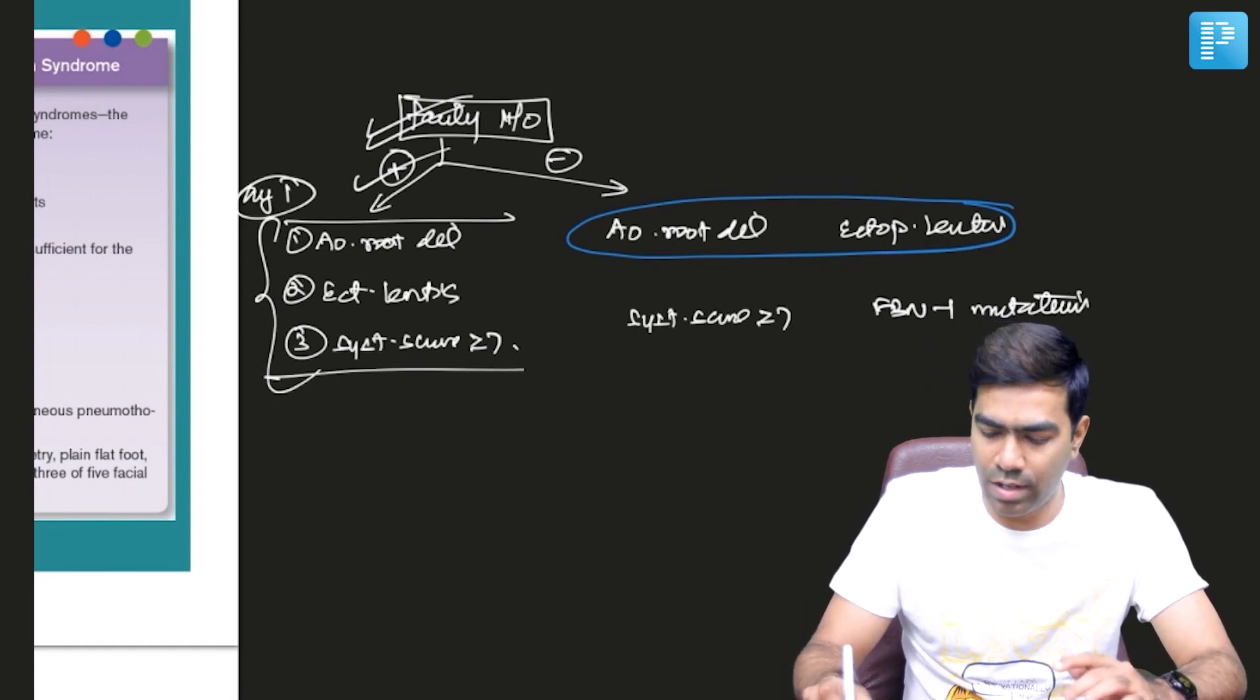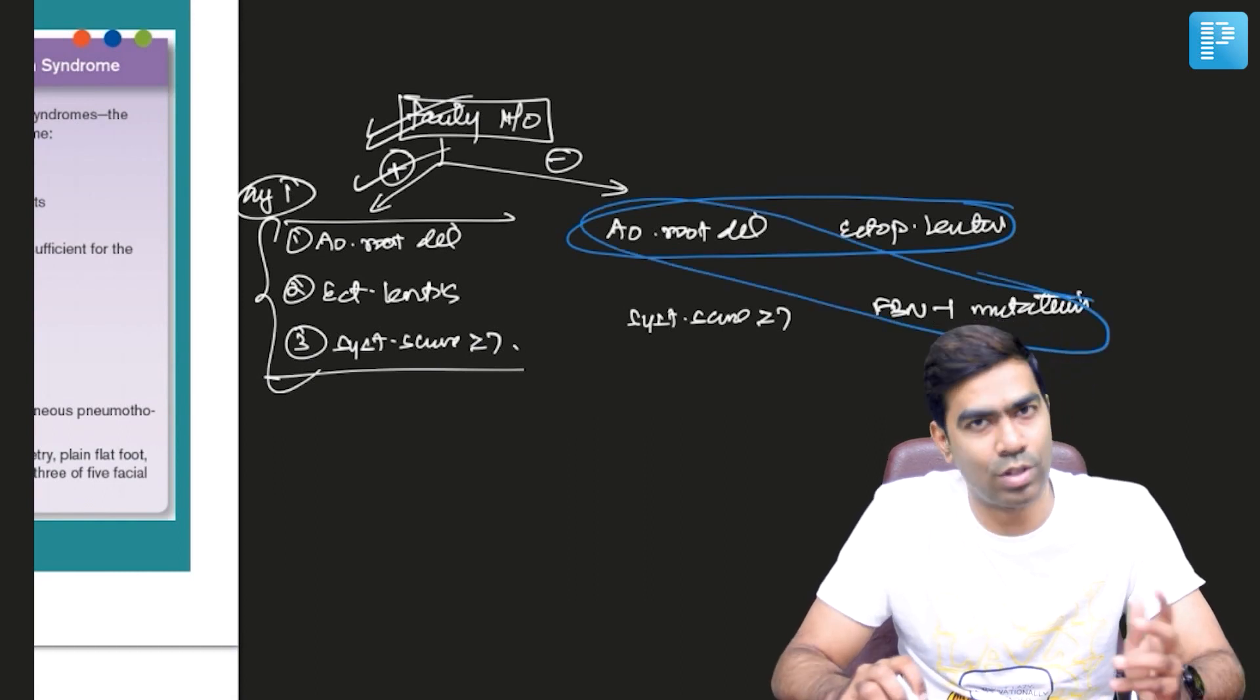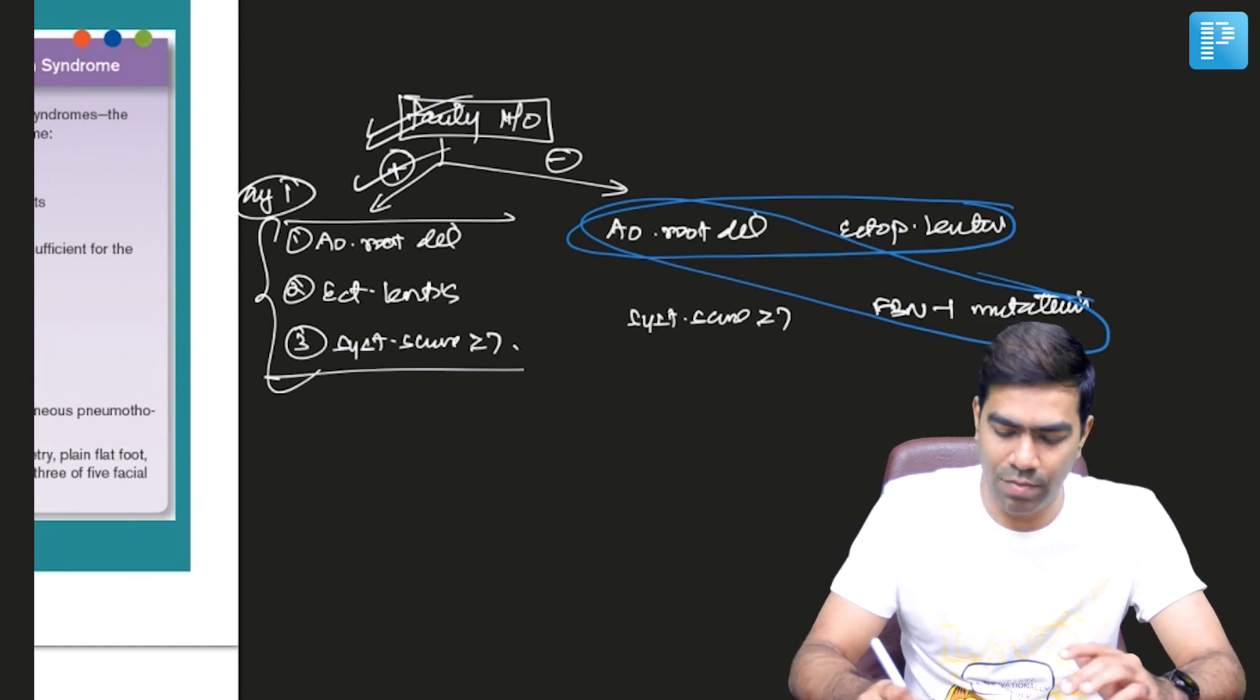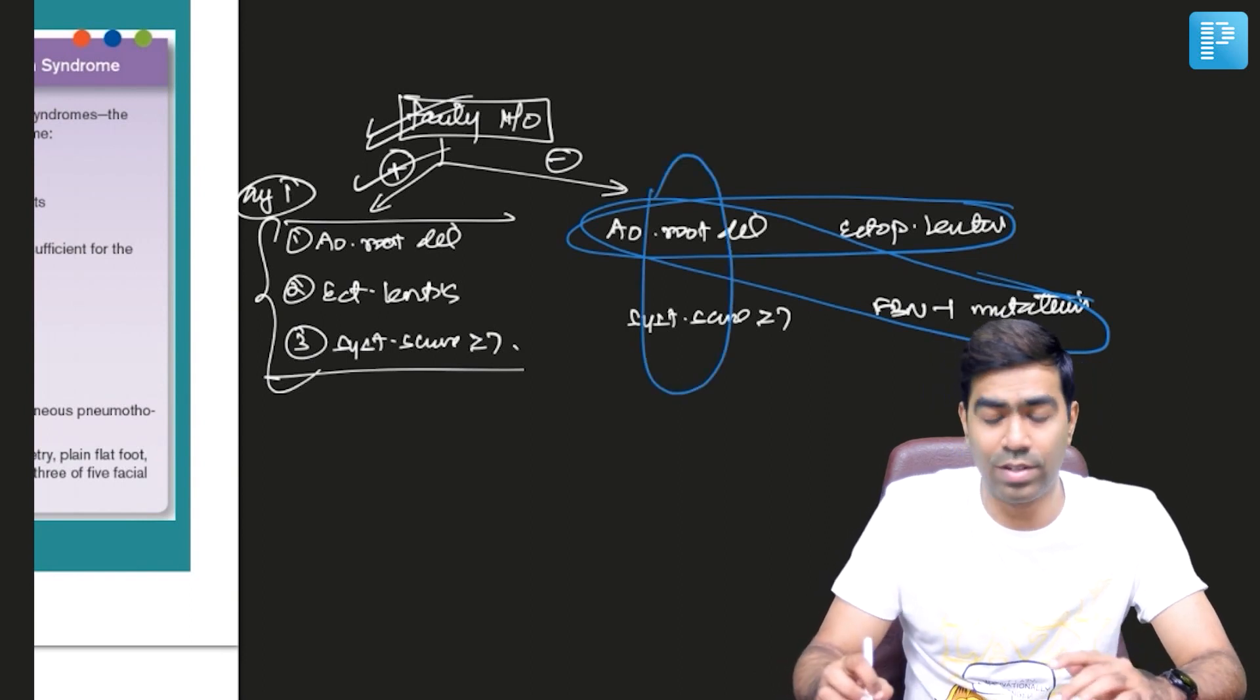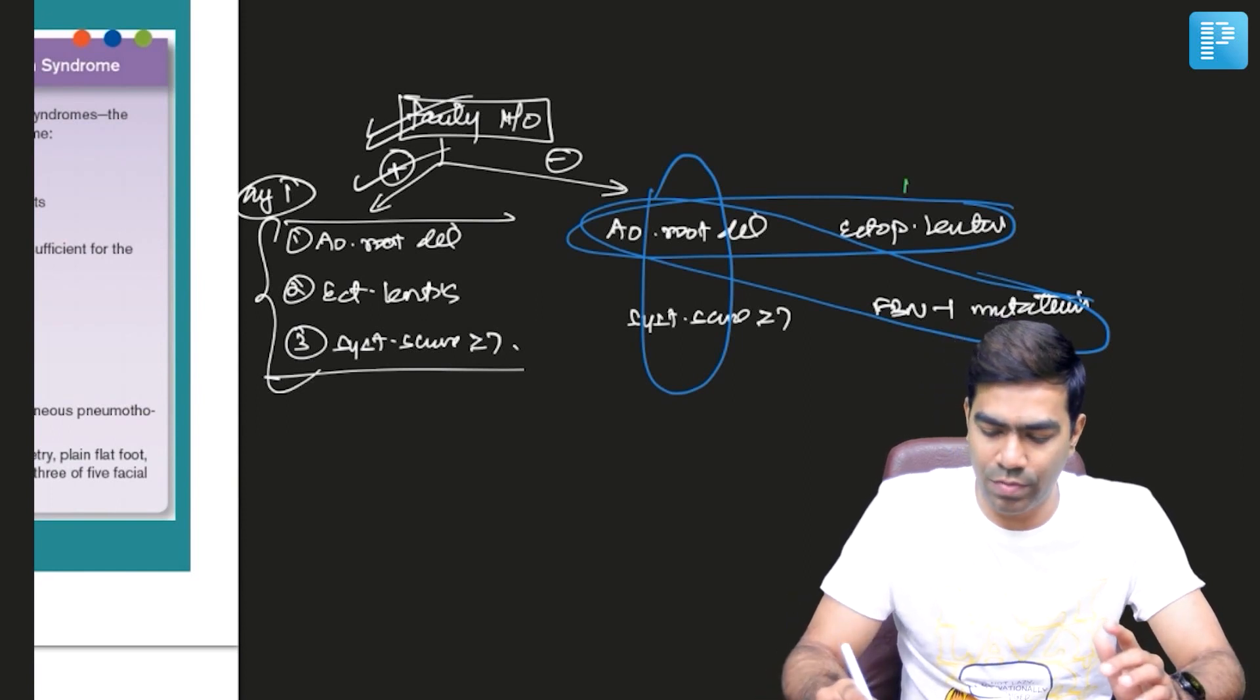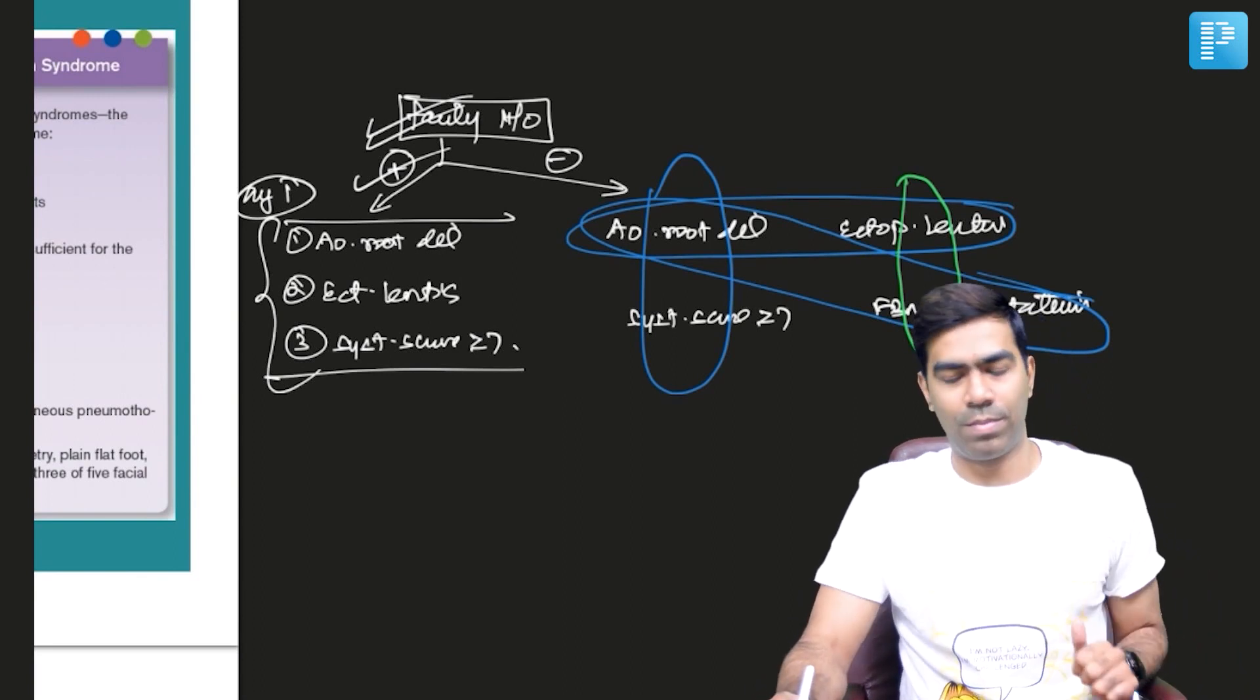If you have aortic root dilatation with fibrillin-1 gene mutation, or aortic root dilatation with systemic score ≥7, you can diagnose Marfan syndrome. Finally, if you have ectopia lentis with proven fibrillin-1 gene mutation, you can also diagnose Marfan syndrome. The revised Ghent criteria also includes a scoring system.